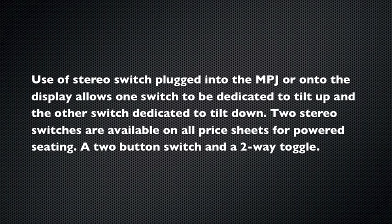Use of a stereo switch plugged into the MPJ or into the display allows one switch to be dedicated to tilt up and the other switch dedicated to tilt down. Two stereo switches are available on all price sheets for powered seating: a two-button switch and a two-way toggle.